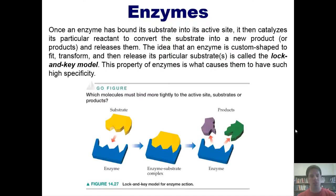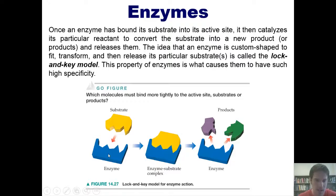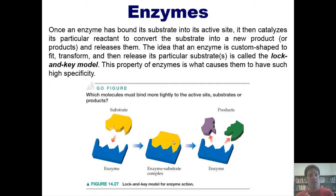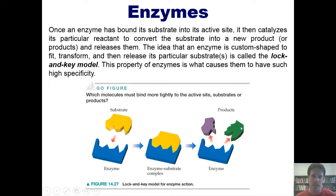This cute depiction shows us a simplified version of the lock and key model. We can imagine, for instance, an enzyme having a specific shape that is perfectly tailored to its substrate. The substrate comes in, binds to that enzyme's active site, and then the enzyme begins catalyzing a conversion of that substrate into products. Once that conversion is complete, the products now have a different shape and are released back into the environment. This is the lock and key model.